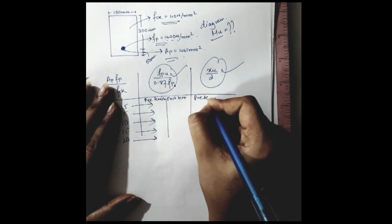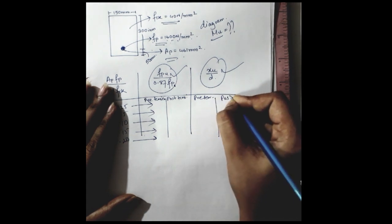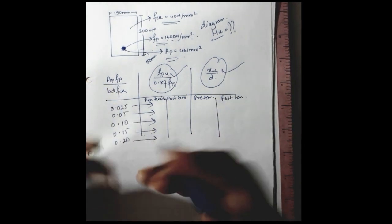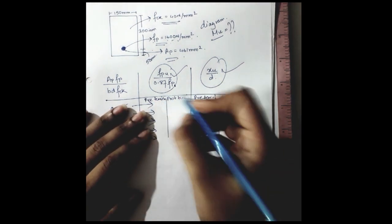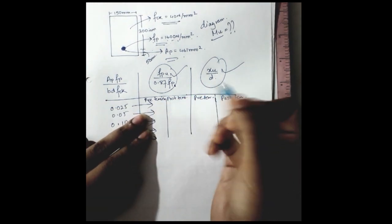This is for pre-tension, this is for post-tension. So you will only count the value from this part, pre-tension.